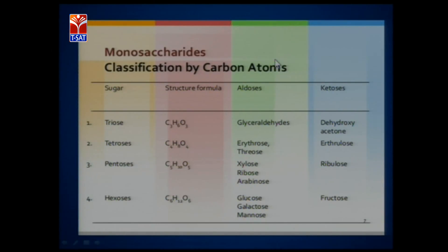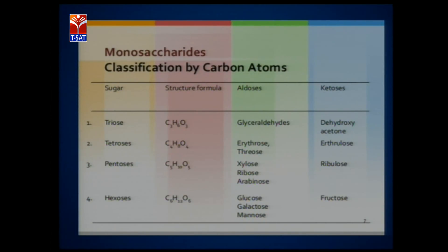Four-carbon monosaccharides are called tetroses — 'tetra' means four — with empirical formula C4H8O4. Examples include erythrose, threose, ribulose, and erythrulose. Pentoses have five carbons, with empirical formula C5H10O5. Examples include xylose, ribose, and ribulose. Hexoses — 'hex' means six — are six-carbon monosaccharides with formula C6H12O6, a very familiar formula, as all of you know C6H12O6 is the formula for glucose.